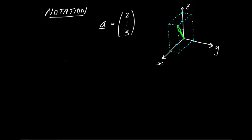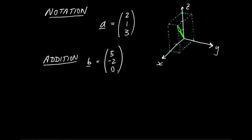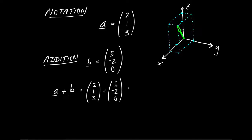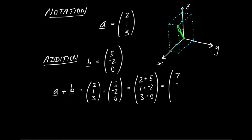The simplest thing you might want to do with a couple of vectors is add them up. So let's think about vector addition. Let's give ourselves a second vector B — we'll make it 5, minus 2, 0. I want to add A and B together: simply 2, 1, 3 plus 5, minus 2, 0. We add the first component of vector A to the first component of vector B and so on. So that's 2 plus 5, 1 plus minus 2, and 3 plus 0, giving 7, minus 1, and 3.